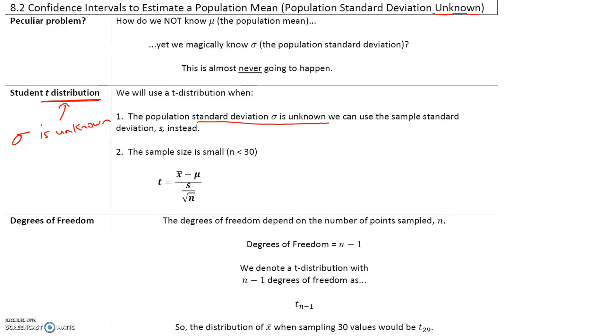We will use the t-distribution when the population standard deviation sigma is unknown and we can use the sample standard deviation instead, or when the sample size is small — less than 30.